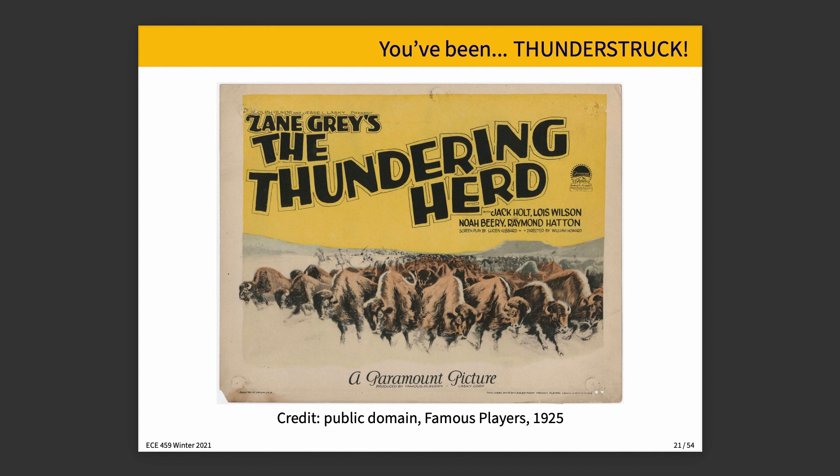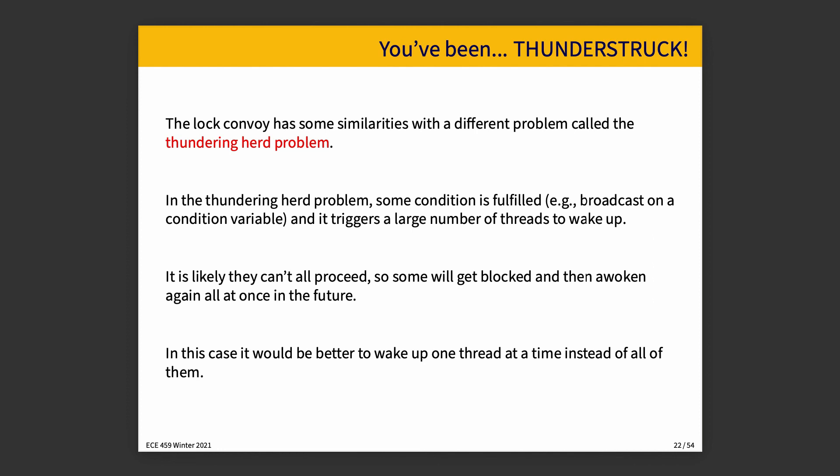We'll also talk about two related problems: the thundering herd problem and the lost wake-up problem — mostly for distinction, because they're similar but not the same. The thundering herd problem is when a condition is fulfilled and lots of threads immediately want to jump on it. If we do a broadcast on a condition variable, it triggers a large number of threads to wake up — anybody who was waiting on that condition. It's likely they can't all proceed; some will get blocked and woken again in the future. If you could limit it to wake up one thread at a time, that would help, because if you wake up ten threads and they all need to enter the critical section, only one can, and waking them all up just results in everybody immediately fighting over that resource.